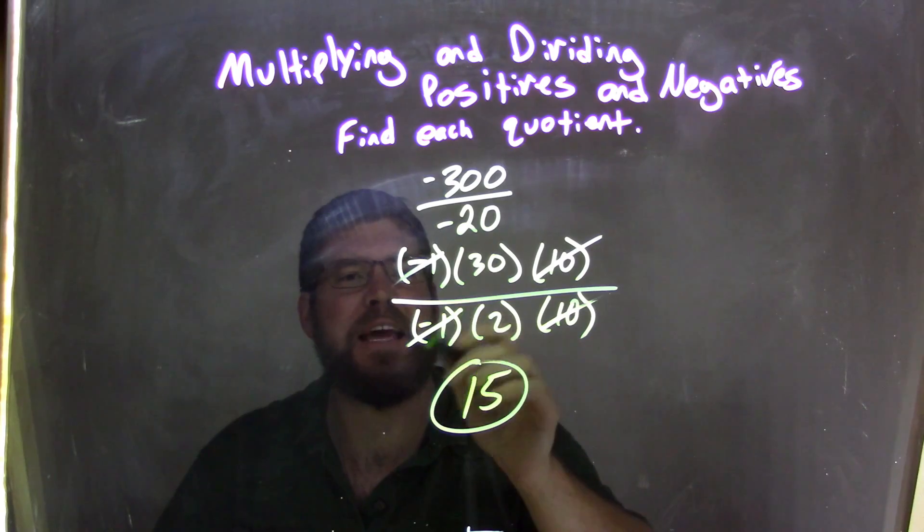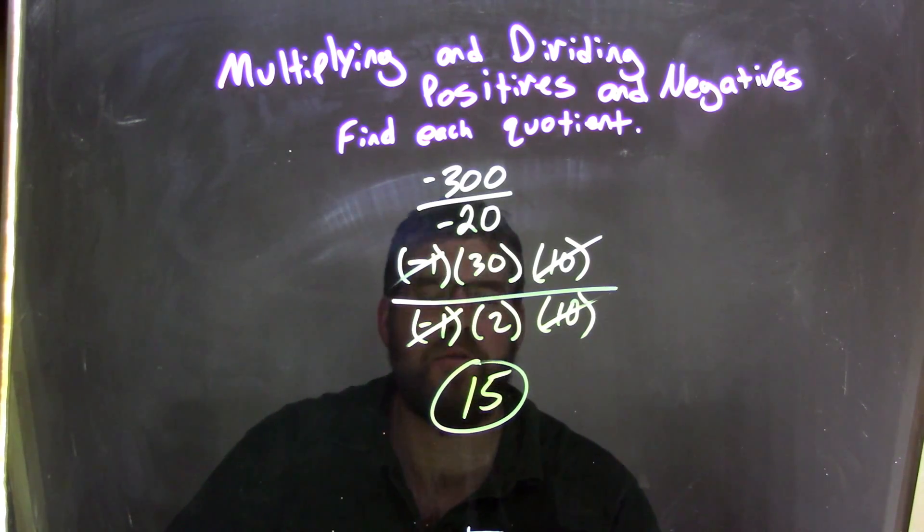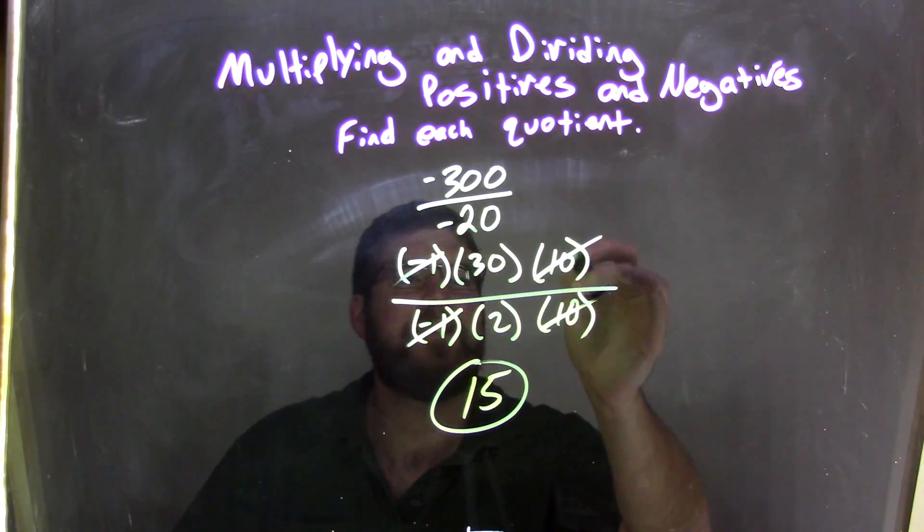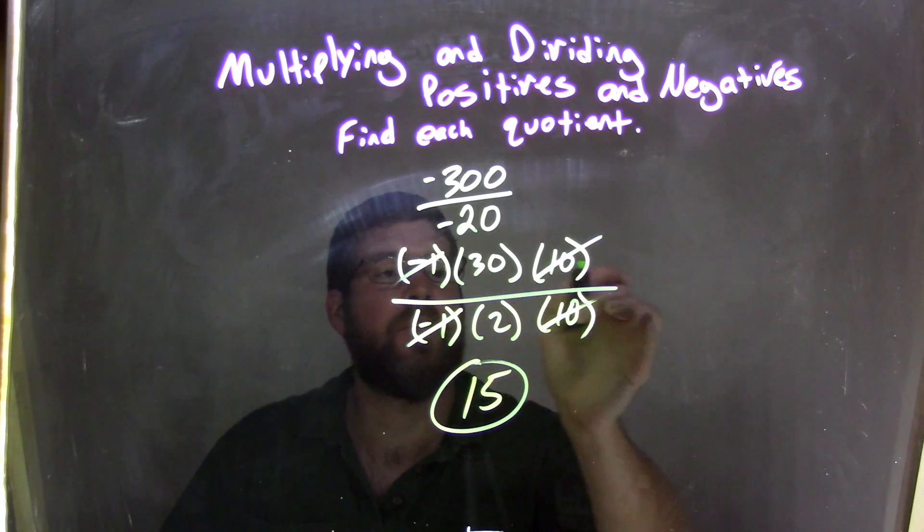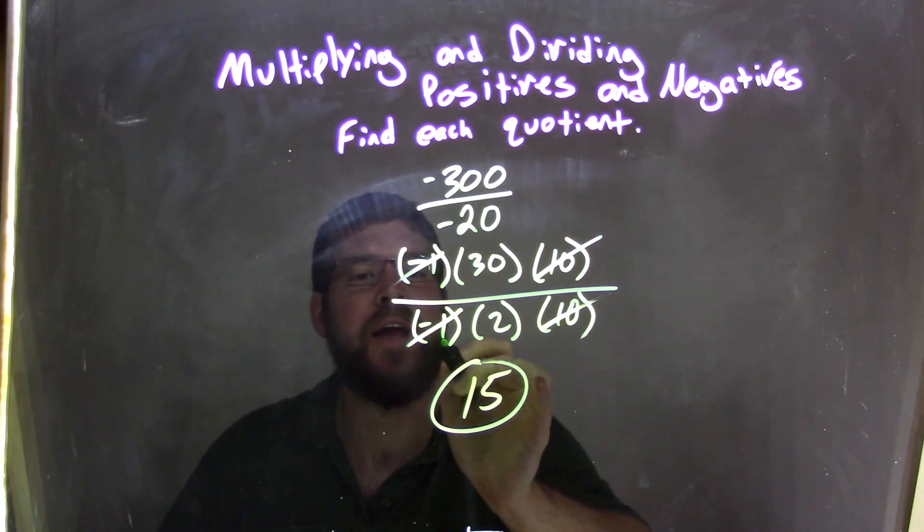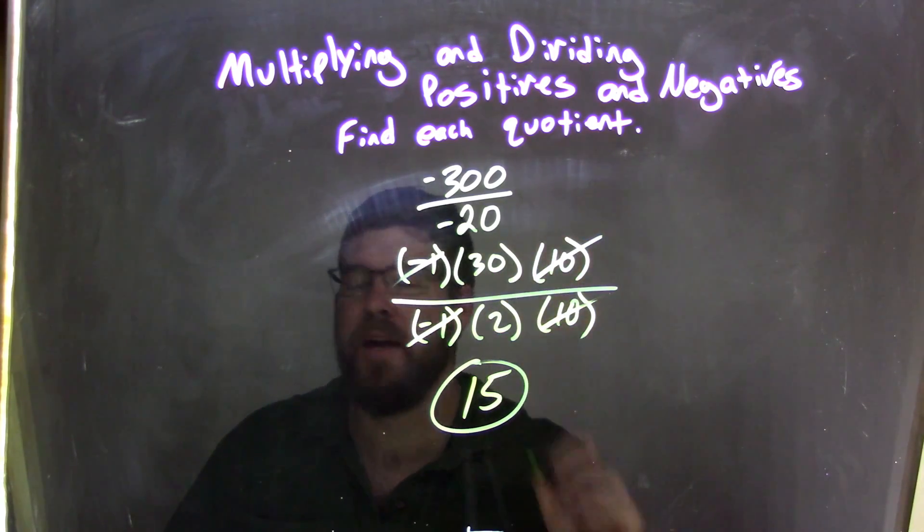So we took out the negative 1s to cancel, and then 30 over 2 was left, and then we had a 10 over 10. So negative 1 times 30 times 10 was negative 300, and negative 1 times 2 times 10 was negative 20.